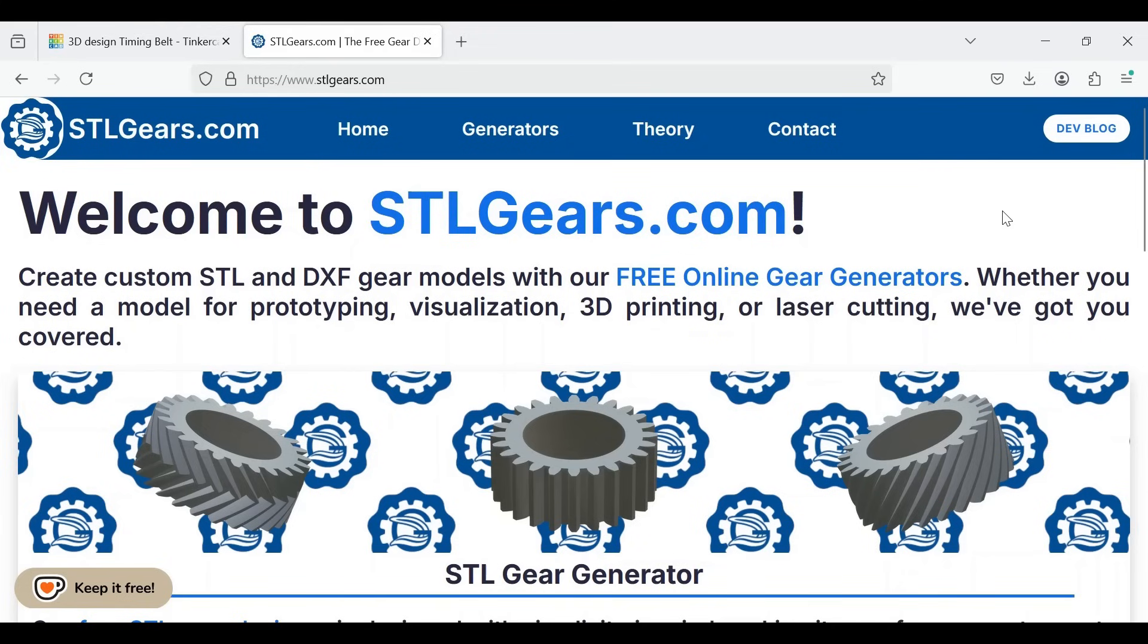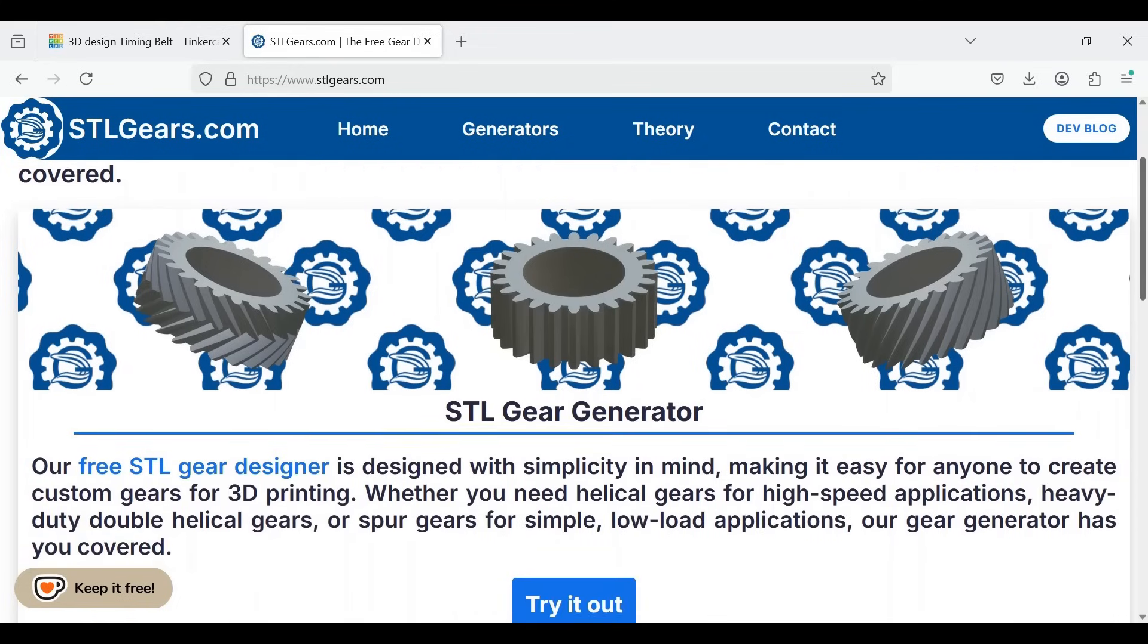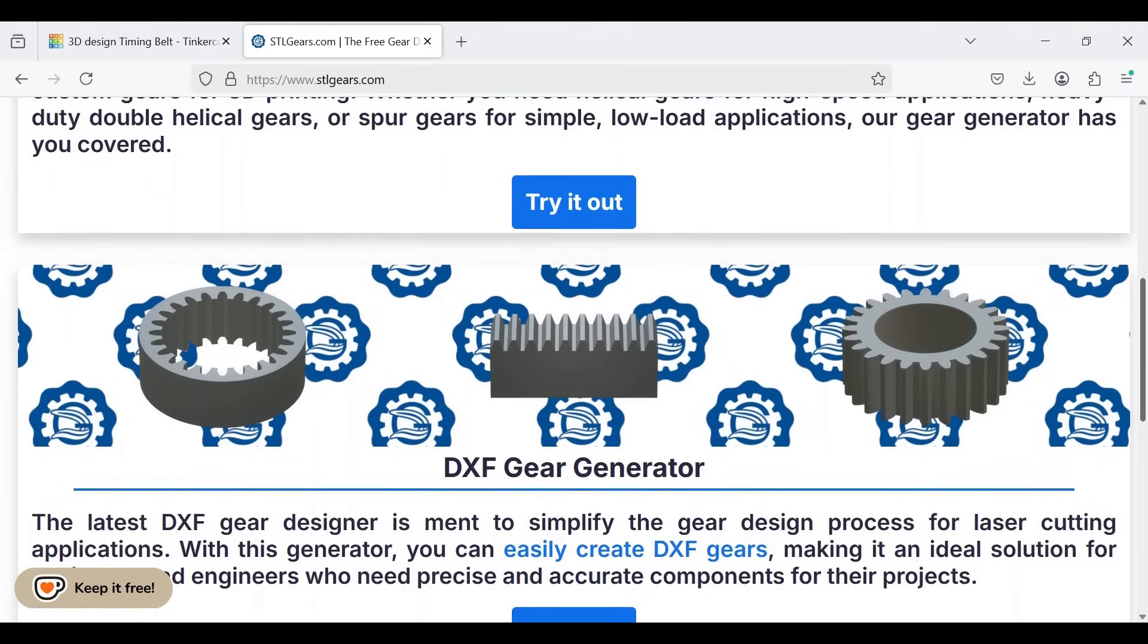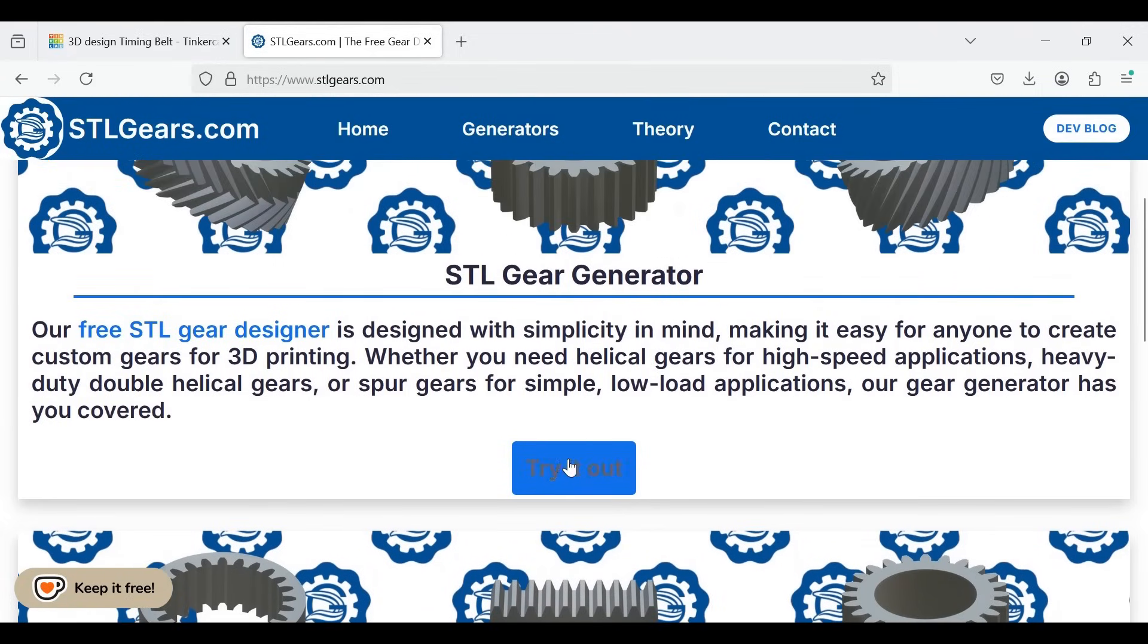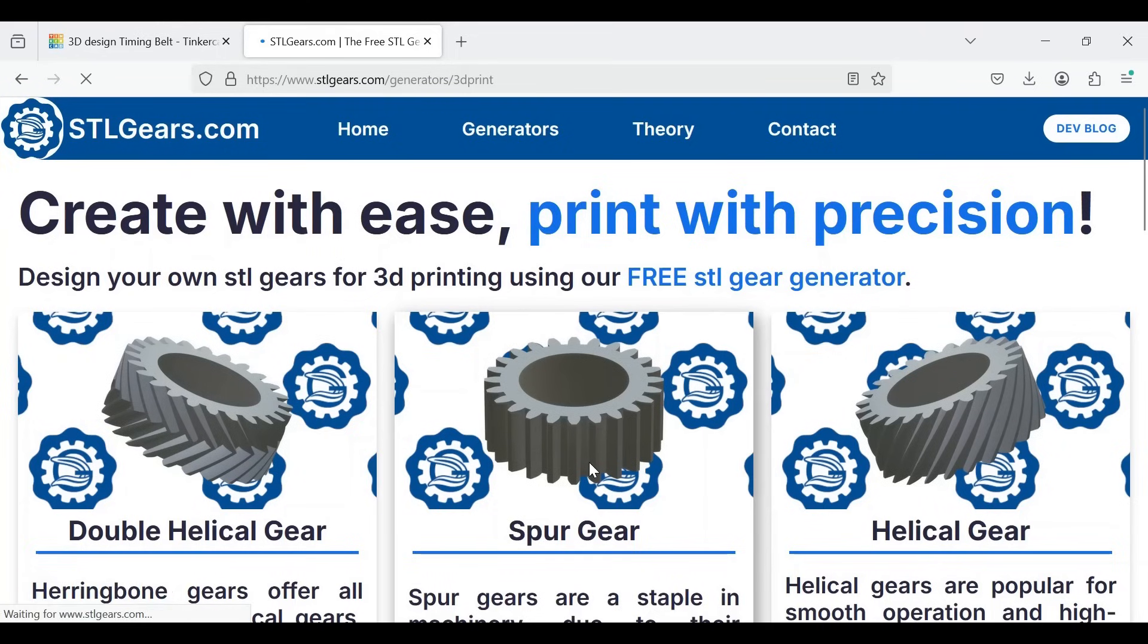Of course, what we need to do now is actually create the gears. But courtesy of the STL gear generator I showed you in a previous video, and armed with our tooth sizes, this is a piece of cake. And here it is at stlgears.com. And if we scroll down, we can see the options we've got. We can generate them in STL or DXF. We're going to use STL because we're going to put this into Tinkercad, and we can click try it out.